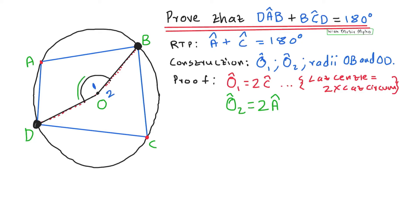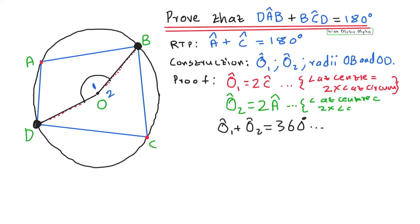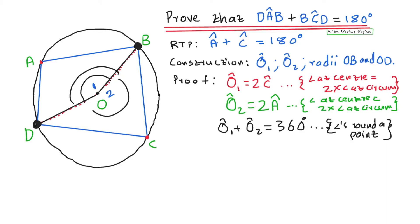Now I want to add O1 and O2. Remember angles around a point, so O1 plus O2 equals 360 degrees. The reason is angles around a point. That's your third step in the proof.